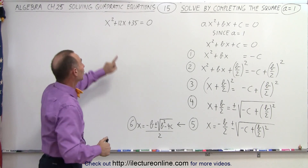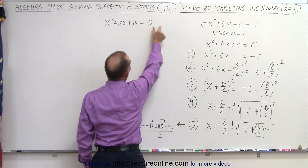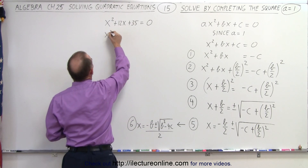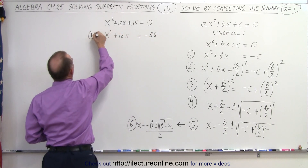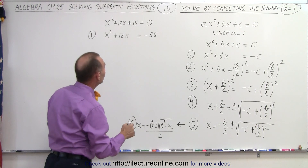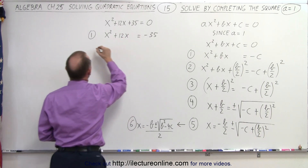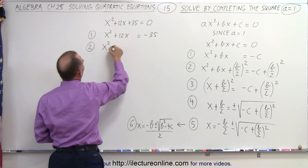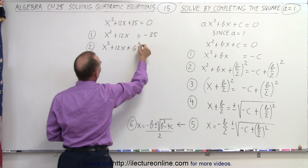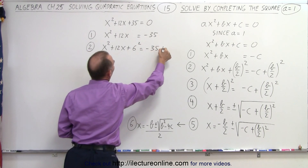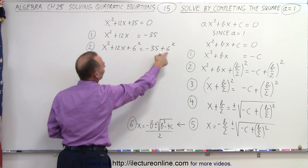Let's use a specific example. Note that the coefficient of the x squared term is equal to 1. Step 1 is to take the constant term and move it to the right side: x squared plus 12x equals negative 35. Step 2, we take half the coefficient of the middle term, square it, and add it to both sides. Half of 12 is 6, and 6 squared is 36. So we add 36 to both sides: x squared plus 12x plus 36 equals negative 35 plus 36.